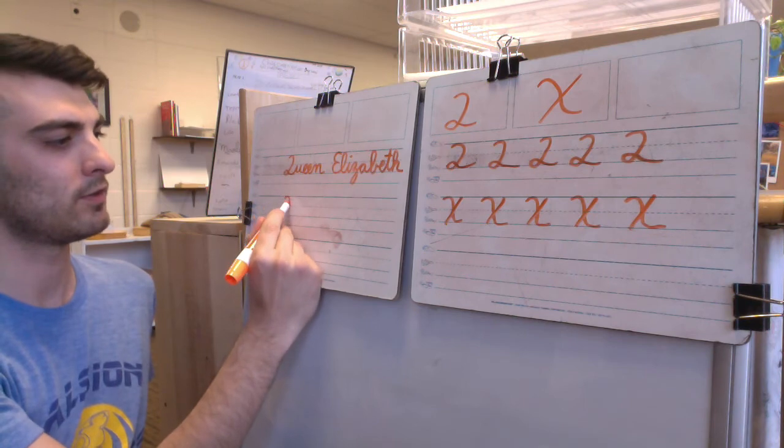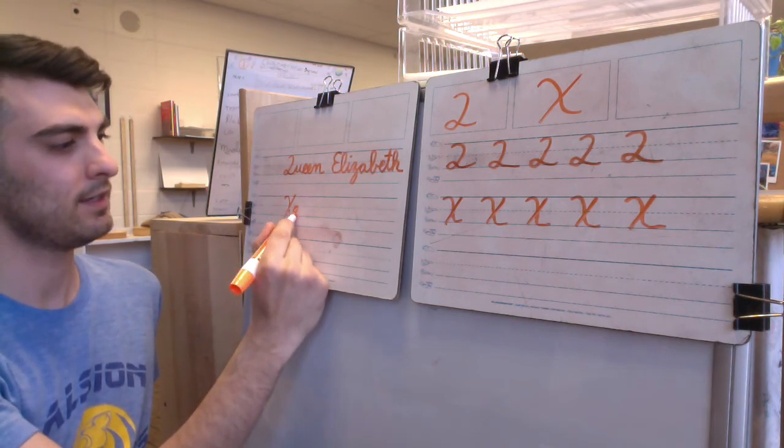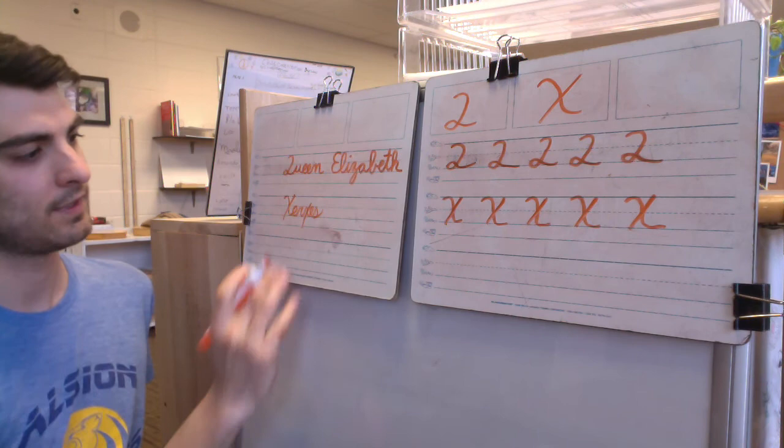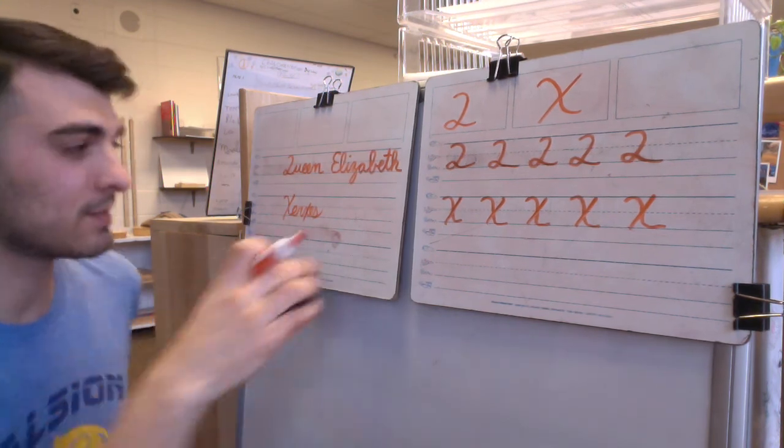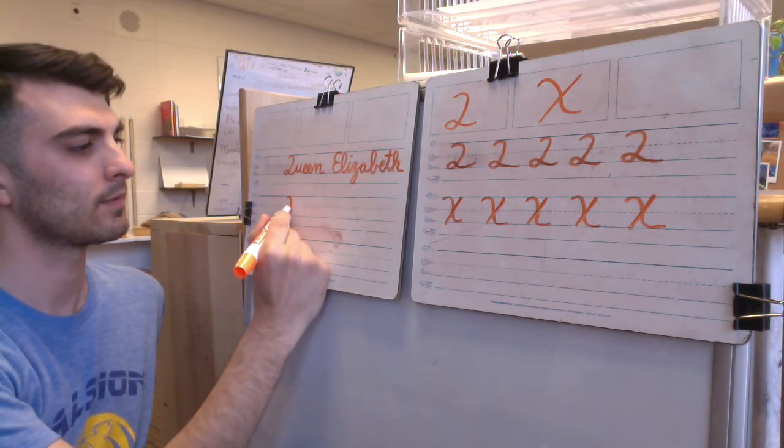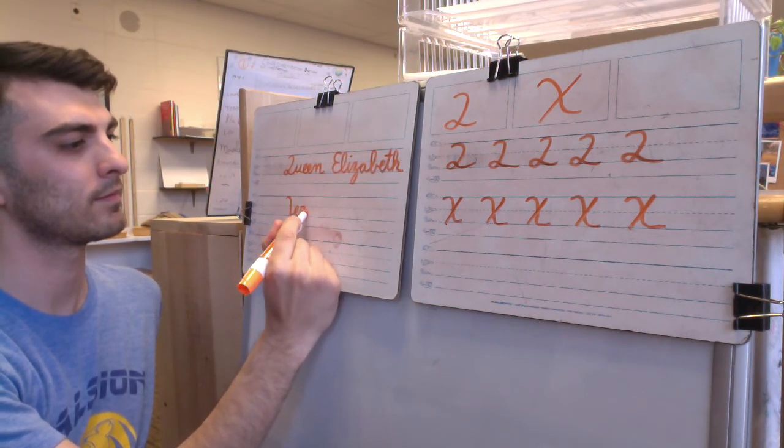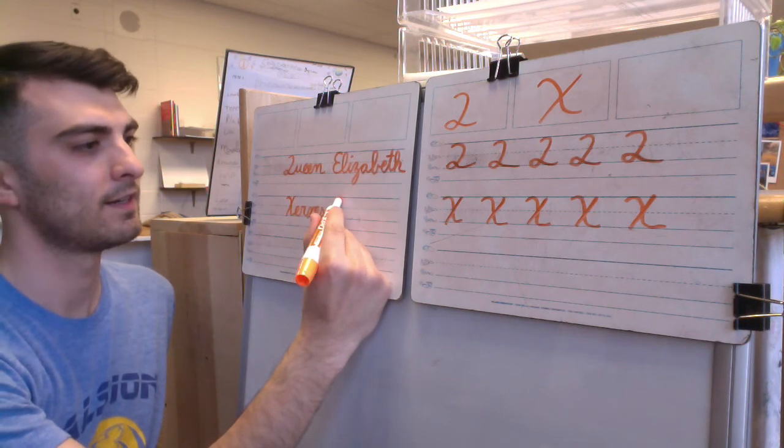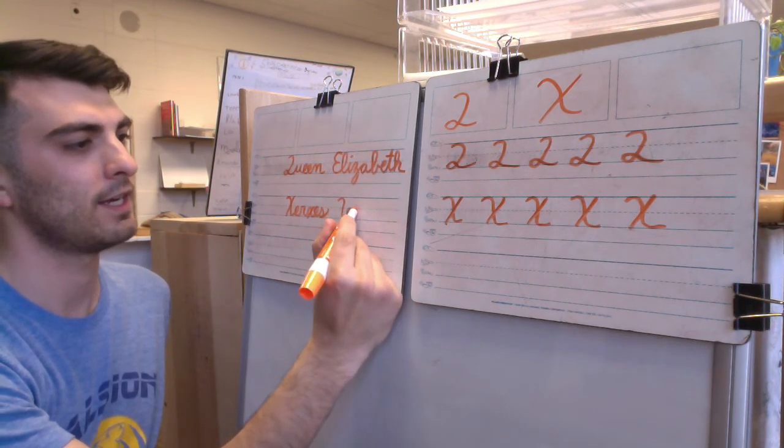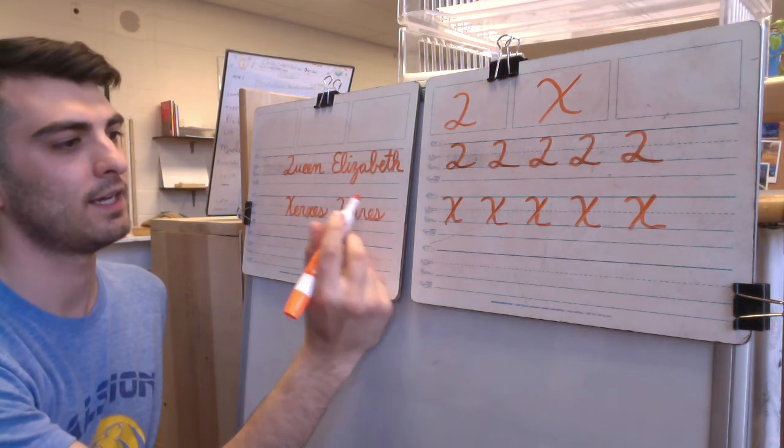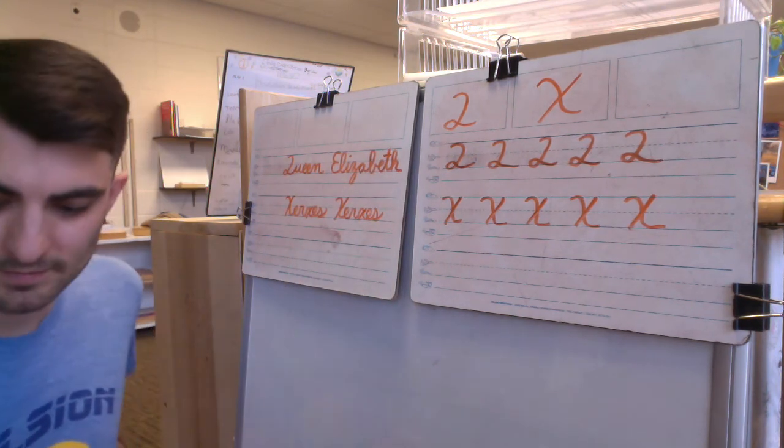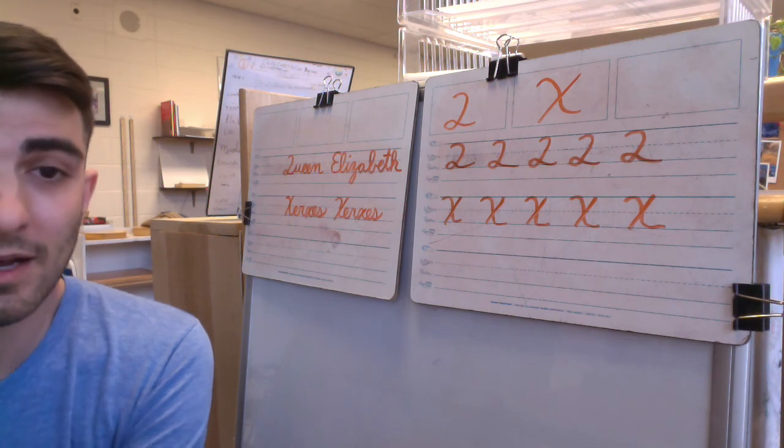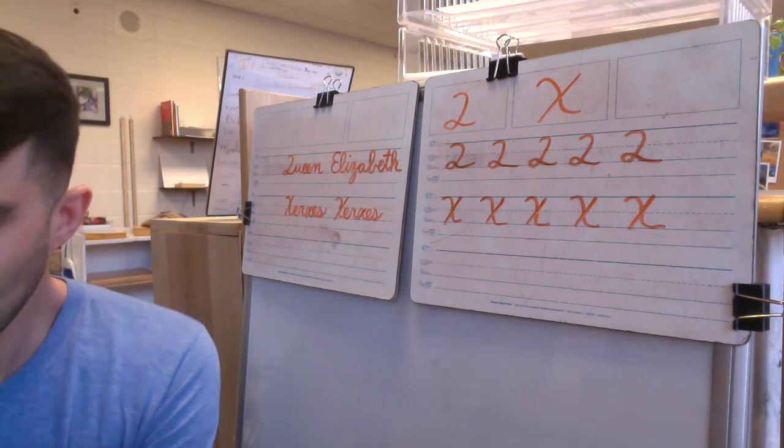And X. How about Xerxes? X-E-R-X-E-S. That was not my best. Cross my X and cross my X. Notice I just went right into my connection there. X-E-R-X-E-S. And I cross both of my X's afterwards. And that is your cursive uppercase alphabet. Happy practicing!